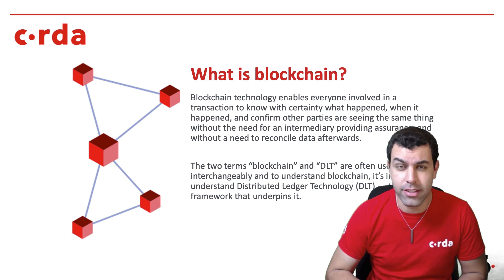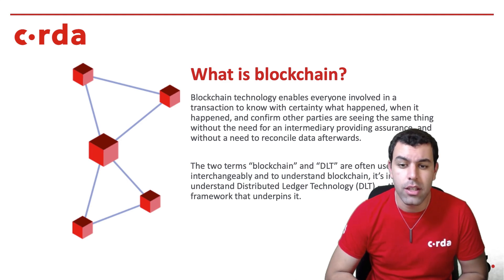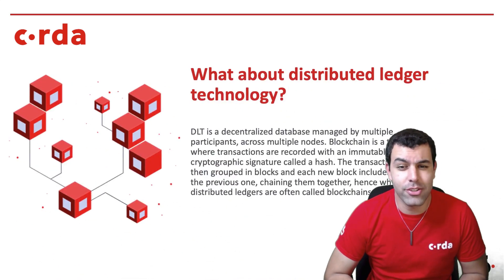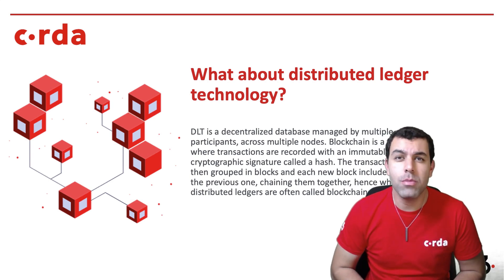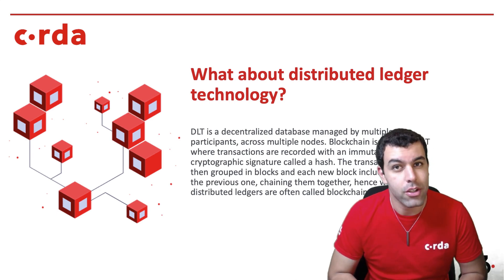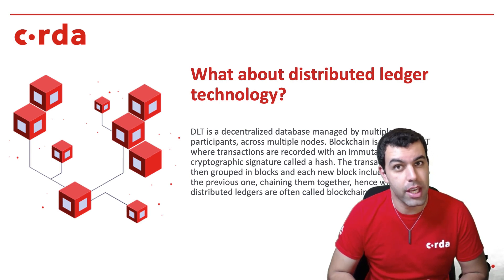The two terms blockchain and DLT tend to be a little bit interchangeable, but it's important to understand DLT — distributed ledger technology — the framework that underpins what blockchain really is. Distributed ledger technology is essentially a decentralized database, or that spreadsheet, managed by multiple participants across multiple nodes. Blockchain is a type of DLT where transactions are recorded with an immutable cryptographic signature called a hash, and those transactions are grouped in blocks where each new block includes a hash of the previous one, chaining them together — hence why distributed ledgers are often called blockchains.